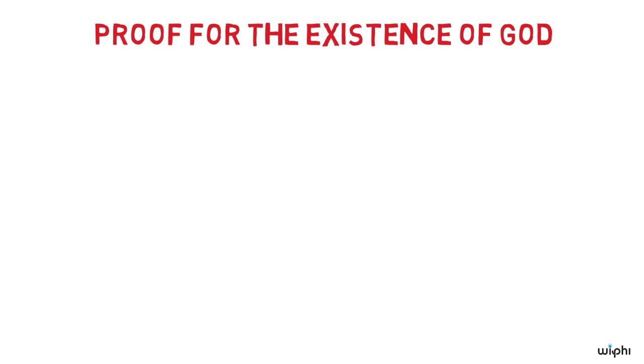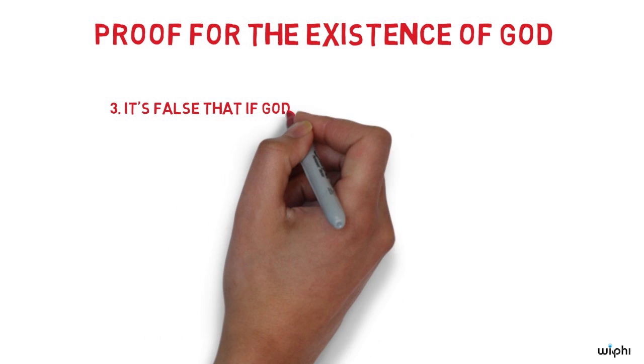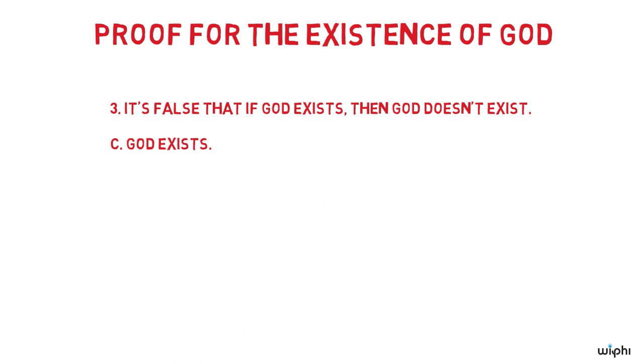Here's another way to see the same problem from a different angle. I'm about to give you a simple proof of the existence of God. It has one premise. The premise is this: It's false that if God exists, then God doesn't exist. Conclusion, God exists.